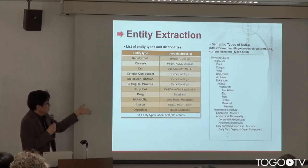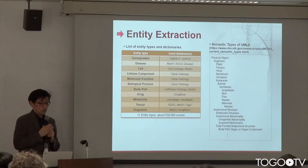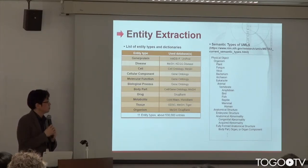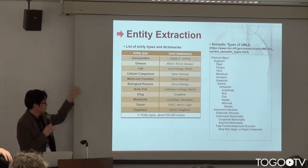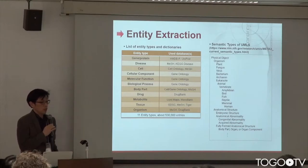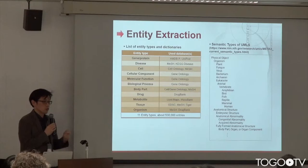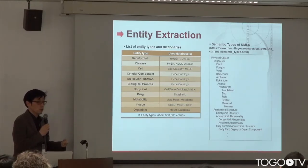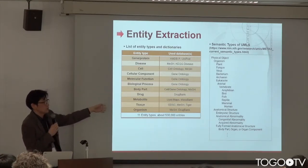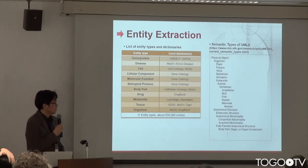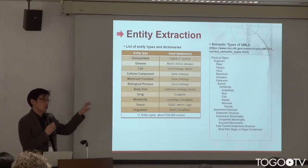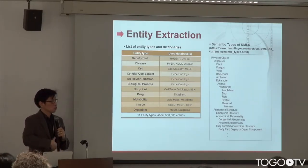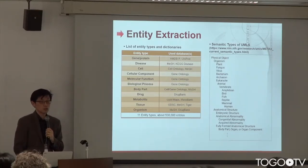We basically extracted 11 different entity types. In PKD4J version 1.0, we used dictionary-based extraction using publicly available databases, with those databases corresponding to each entity type. In version 1.1, we also integrated UMLS on top of the dictionary, so we used both of them to extract entities.